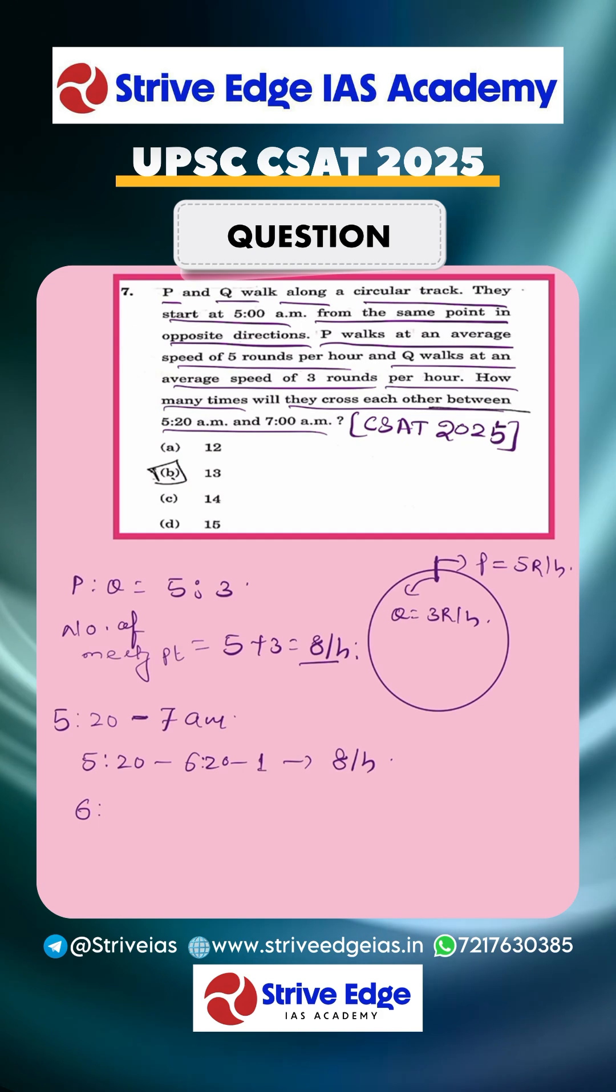Next, from 6:20 to 7:00 a.m., it is 40 minutes. So in 40 minutes, how many meetings are there? So 40 divided by 60. We know that in one hour, there are 8 meeting points. In 40 minutes, we just have to multiply that and you will find it is